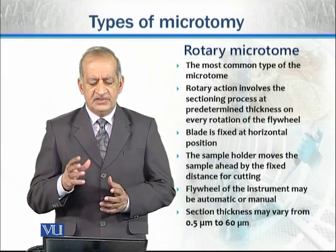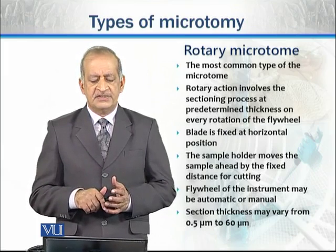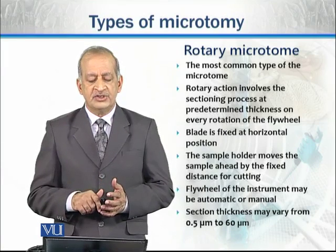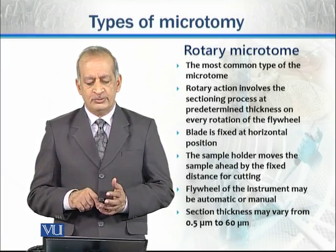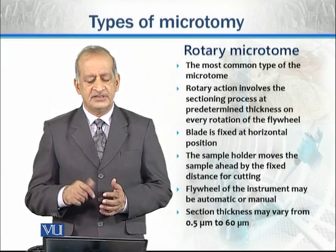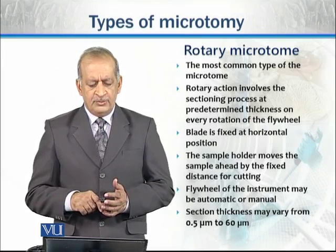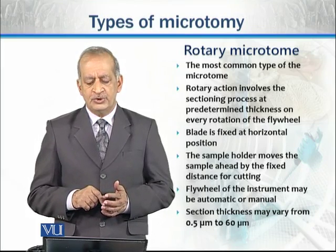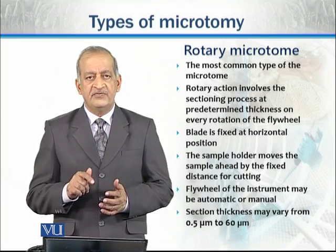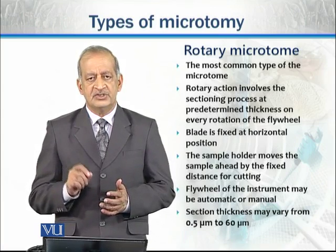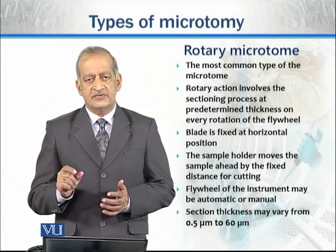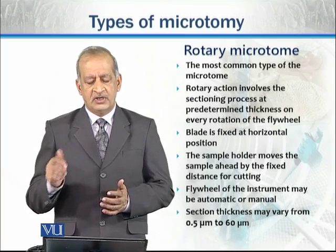The rotary microtome, as the name indicates, involves a rotary action where sectioning occurs at a predetermined thickness on every rotation of the flywheel. This is the most common type of microtome used. The blade is fixed in a horizontal position, and the sample holder moves the sample forward by a fixed distance for cutting each section.